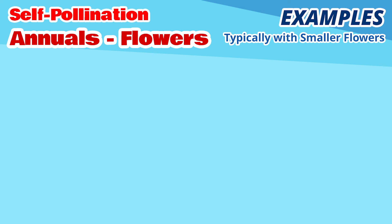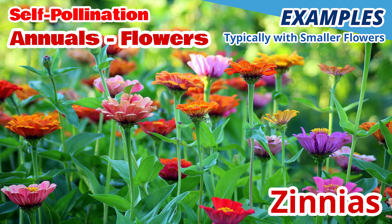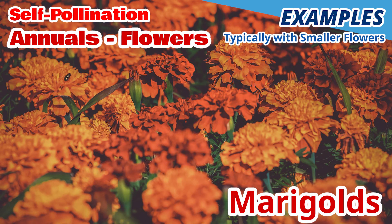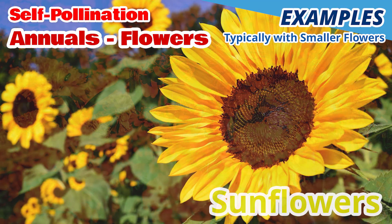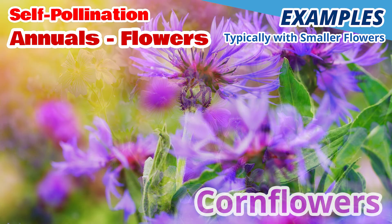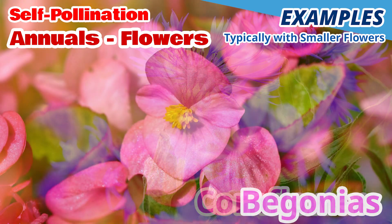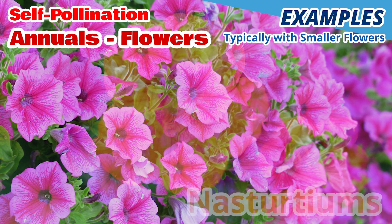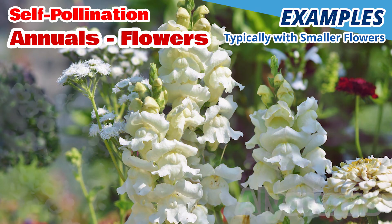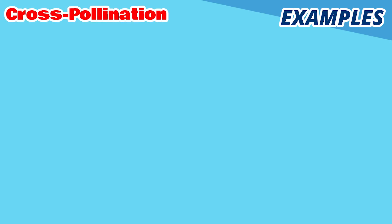Some annuals that are self-pollinating are zinnias, cosmos, larkspur, most marigolds, most sunflowers, geraniums, cornflowers, begonias, petunias, nasturtiums, snapdragons, and alyssums.